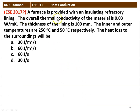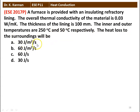Next question: a furnace is provided with an insulating refractory lining. The overall thermal conductivity of the material is 0.03 watts per meter Kelvin. The thickness of the lining is 100 millimeter. The inner and outer temperatures are 250 degree Celsius and 50 degree Celsius respectively. The heat loss to the surrounding will be: (A) 30 joules per meter square per second, (B) 60 joules per meter square per second, (C) 60 joules per second, (D) 30 joules per second.